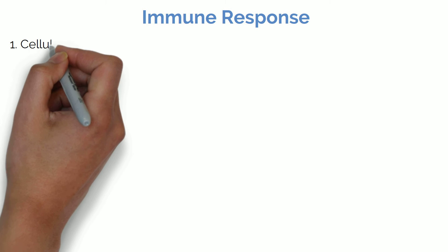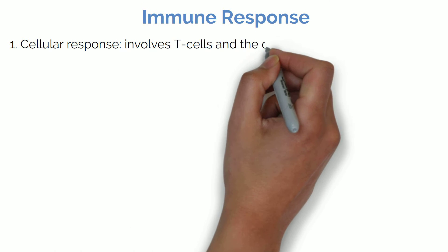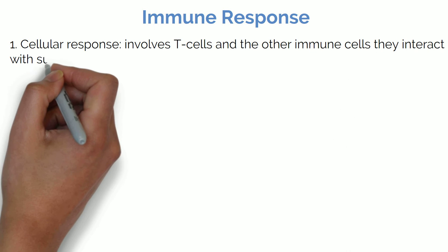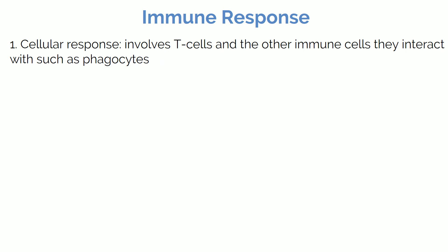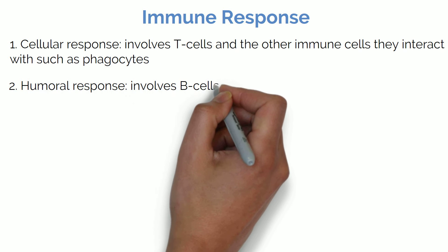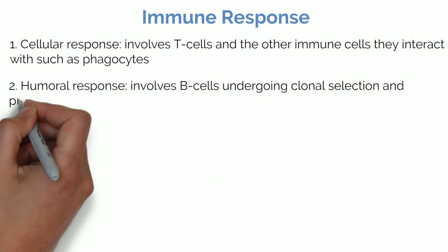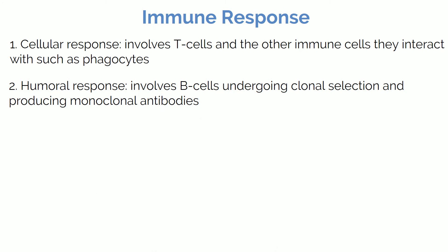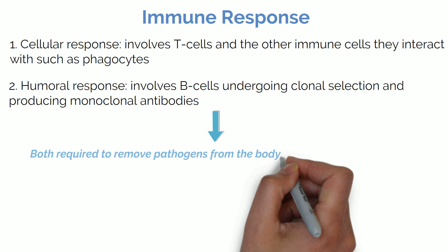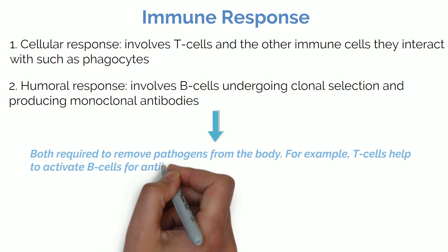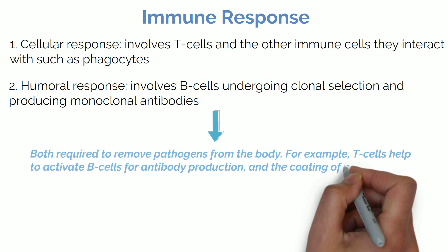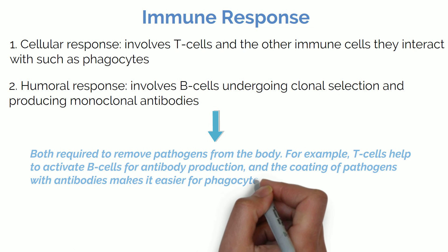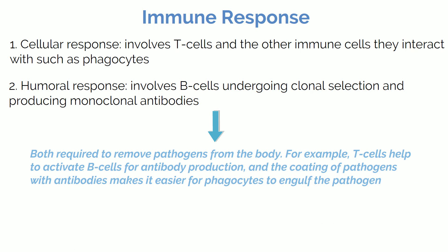The immune response is split into two: the cellular and the humoral response. The cellular response involves T cells and other immune cells they interact with, such as phagocytes. The humoral response involves B cells undergoing clonal selection and producing monoclonal antibodies. Both responses are required to remove pathogens from the body. For example, T cells help activate B cells for antibody production, and the coating of pathogens with antibodies makes it easier for phagocytes to engulf the pathogen.